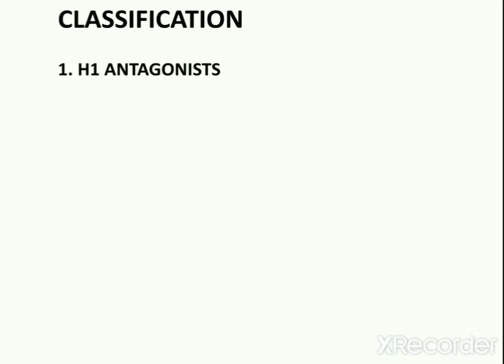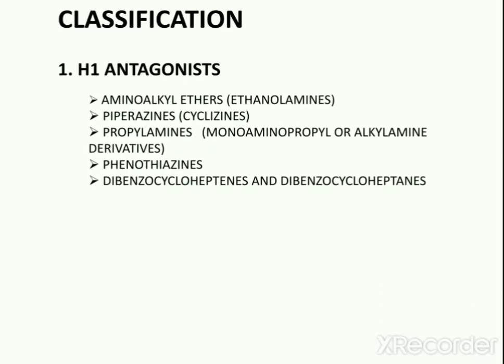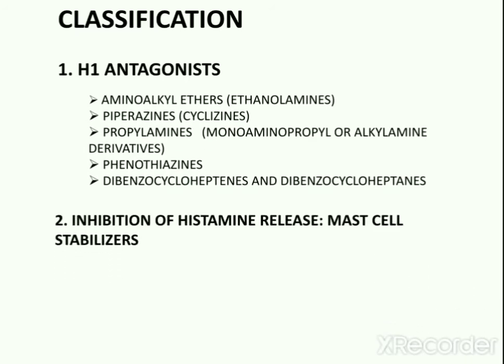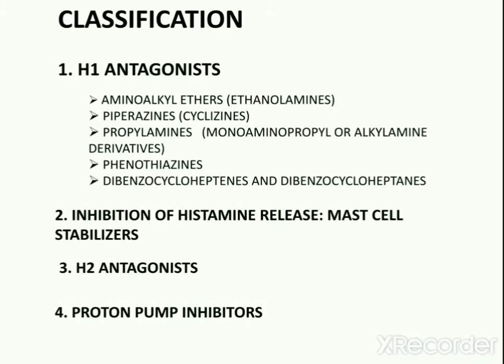The classification of antihistaminic agents is divided into four main categories: first, H1 antagonists; second, mast cell stabilizers; third, H2 antagonists; and fourth, proton pump inhibitors.